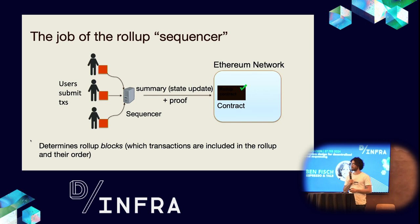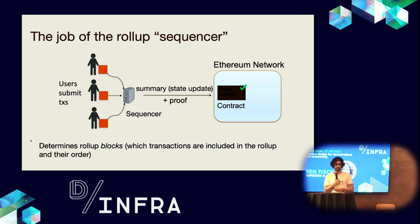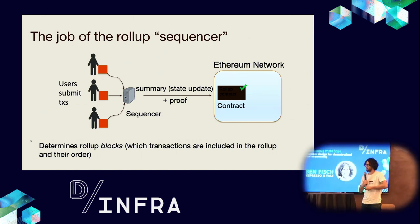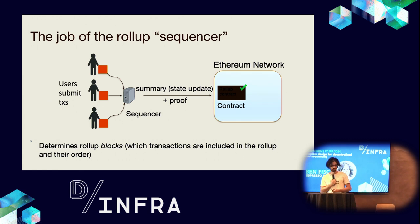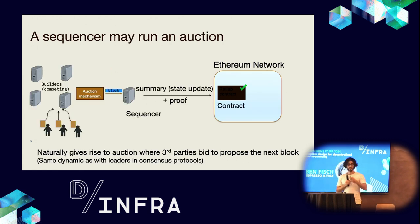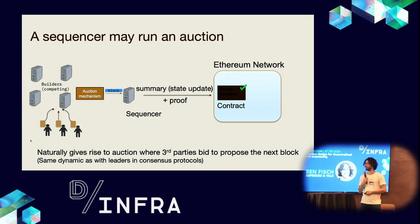The job of a sequencer is to collect transactions, order them, and determine some state transition, then summarize it and post a proof — if it's a ZK rollup — to the Ethereum network. This determines rollup blocks: which transactions are included and their order. The sequencer may also run an auction; if you're the sequencer of a rollup, you might run an auction among competing builders.